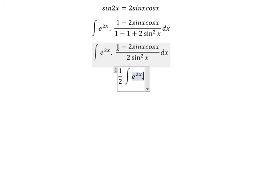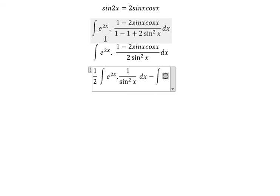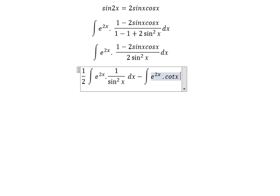Next, we have 1 divided by sin squared x. So we got about 1 over 2. So we don't have anything in here because they just cancel together and we have sin x divided by sin x. So you got about e to the power of 2x multiplied with cotangent x dx.